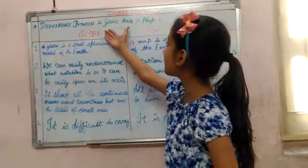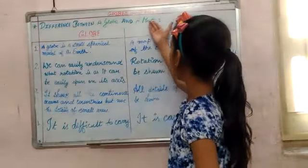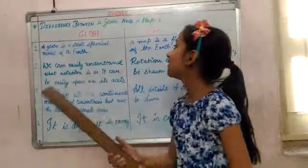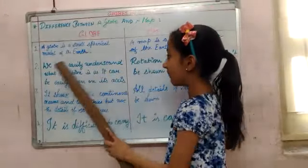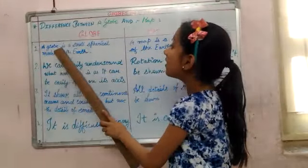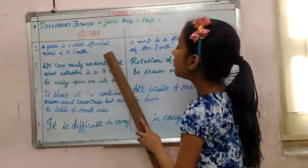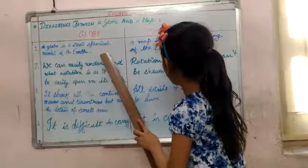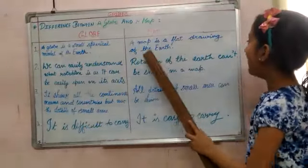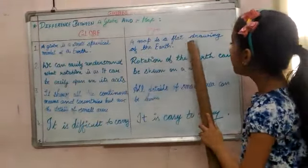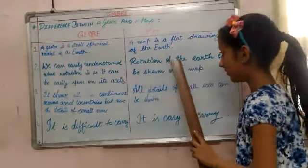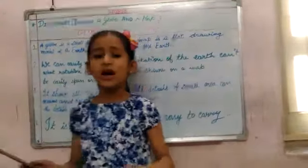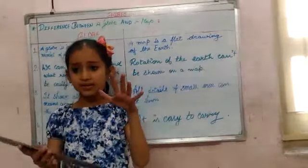Let us look at the differences between a globe and a map. Number one: a globe is a small spherical model of the earth, while a map is a flat drawing of the earth.